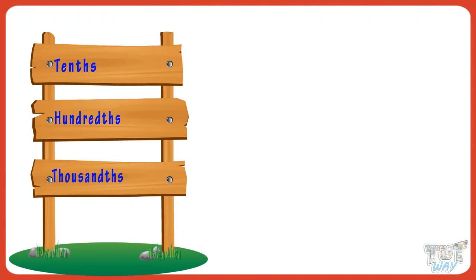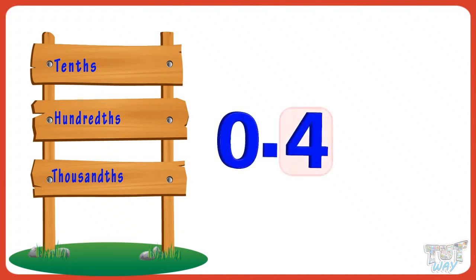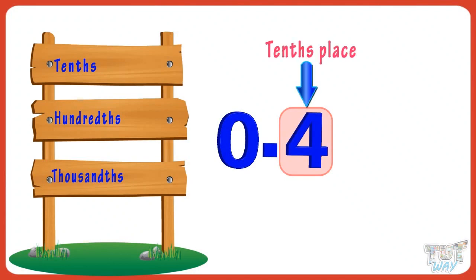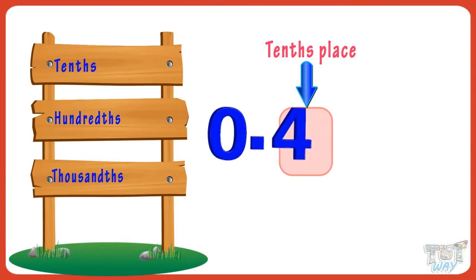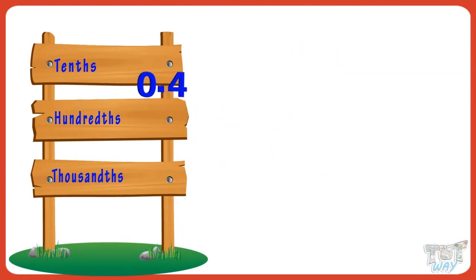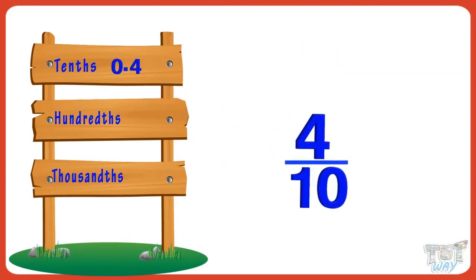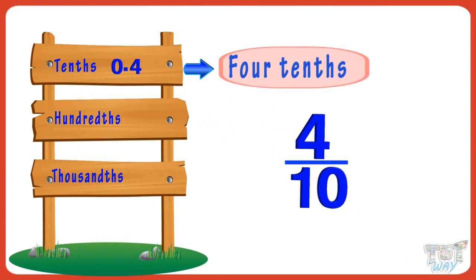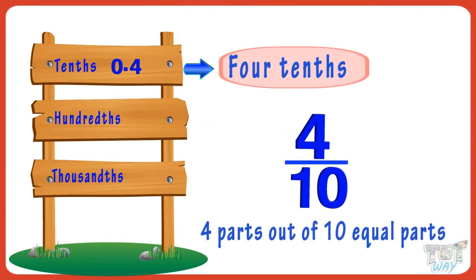Kids, the first place to the right of the decimal point is called the tenths place. 0.4, or 4 by 10, we name it as four-tenths, and it represents four parts out of ten equal parts.